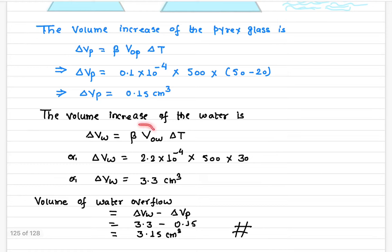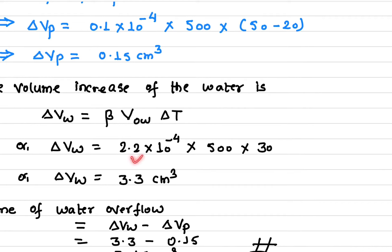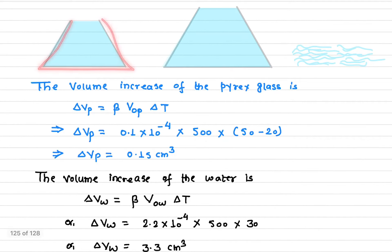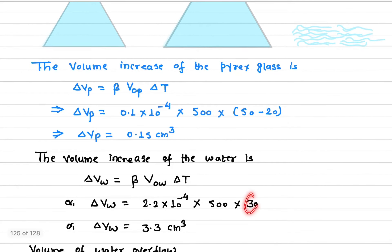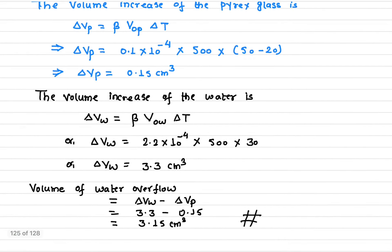Now we do the same calculation for water using the same formula, but with beta for water, which is 2.2 times 10 to the negative 4. The initial volume of water is also 500 cubic centimeters since the Pyrex glass was entirely filled with water, and the change in temperature is the same: 30 degrees. This gives a change in volume of 3.3 cubic centimeters for the water.